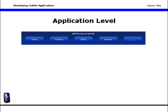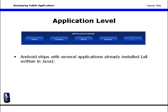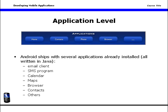Starting at the top of the stack, the application level — Android ships with several applications already installed, all of which are written in Java: an email client, SMS program, calendar, maps, browser, contacts, and others.